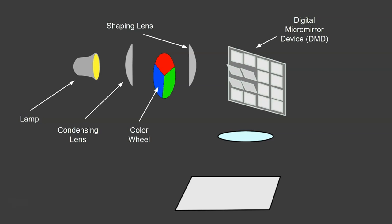That light then goes through a shaping lens, and the shaping lens focuses the light onto the digital micromirror device. This is the clever component in the system. It's actually a grid of thousands or hundreds of thousands of tiny...